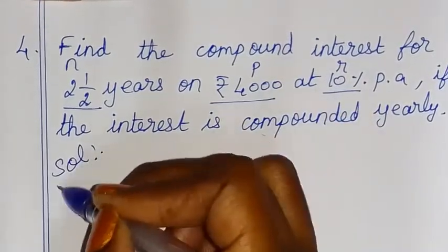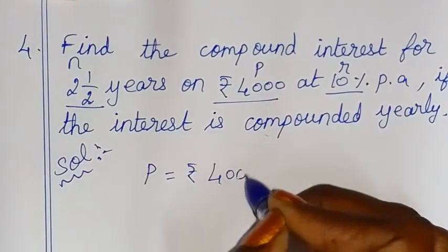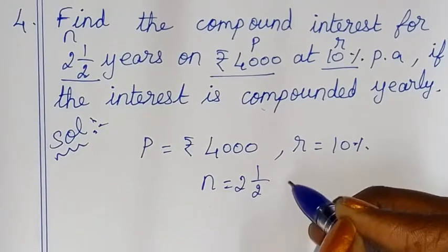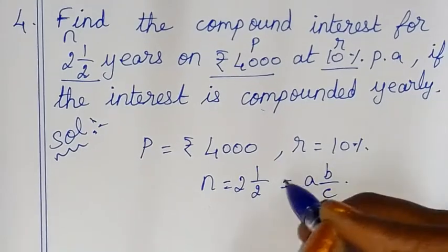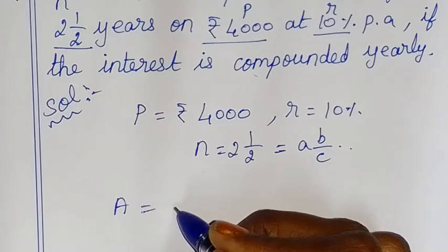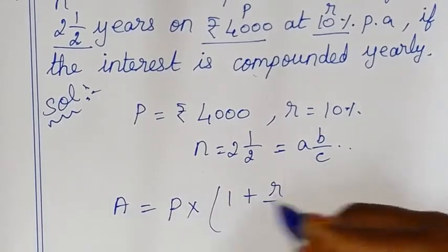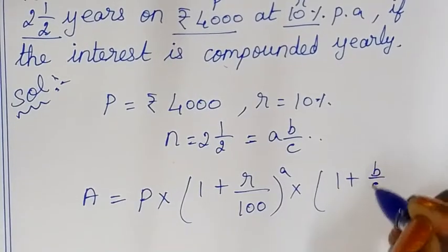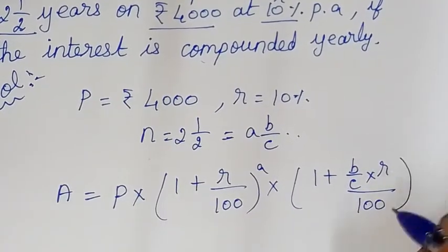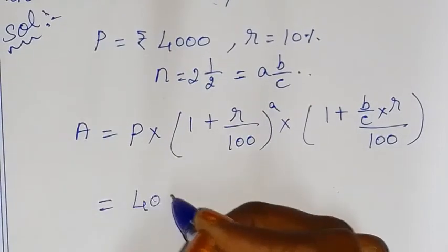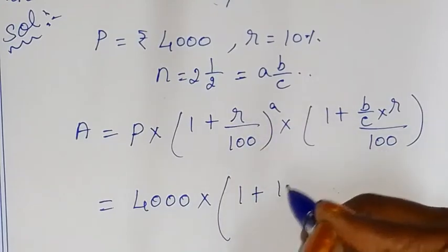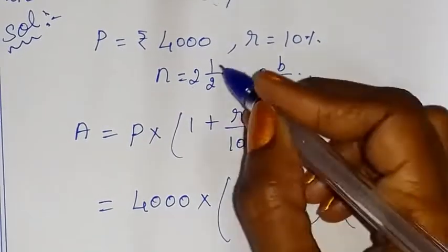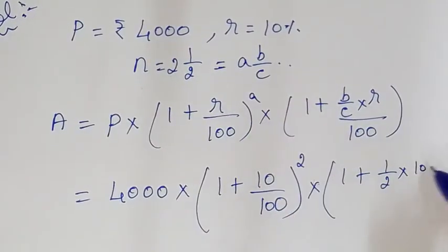Principal value P is equal to Rs.4000. Rate of interest R is equal to 10%. Number of years is 2.5 years, which is a mixed fraction. The formula for compounded annually with a mixed fraction number of years is: Amount equals P into 1 plus R by 100 whole power whole number, into 1 plus fraction part times R by 100.